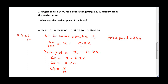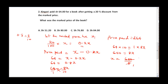Since 0.8 is the same as 8 over 10, we rewrite as 64 equals 8 over 10 times X. Cross multiplying gives 64 times 10 equals 8X, so 640 equals 8X. Therefore X equals 640 divided by 8, which is 80 shillings. The marked price of the book was 80 shillings, and the correct answer is option B.